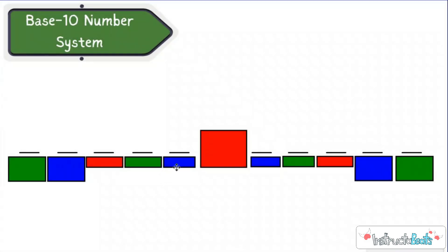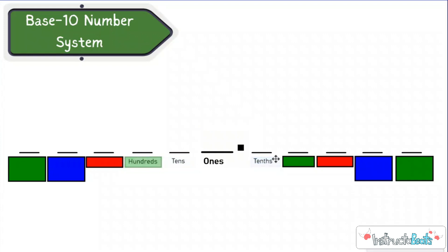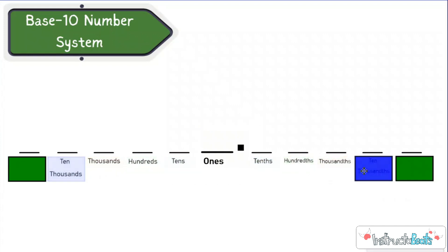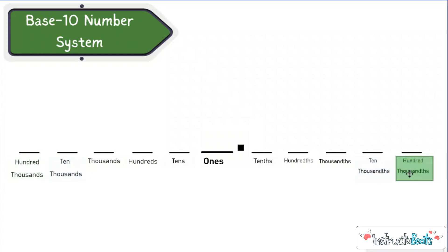And just kind of review — we have our ones, our tens, our tenths, our hundreds, our thousands, our thousandths, ten thousands, ten thousandths, hundred thousands, and hundred thousandths. Nice symmetry there.